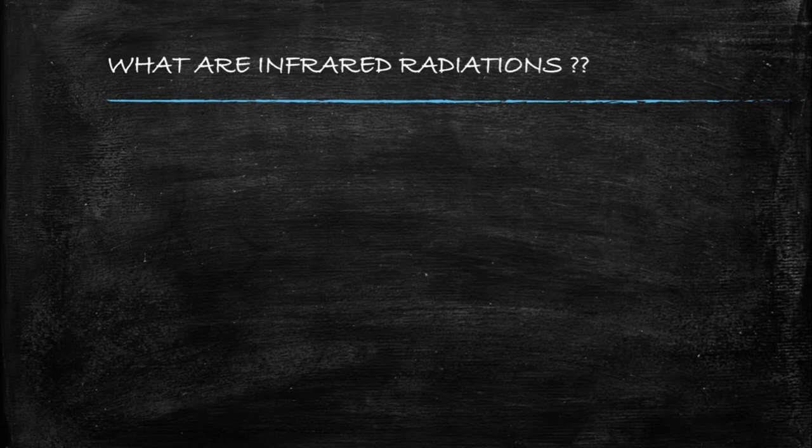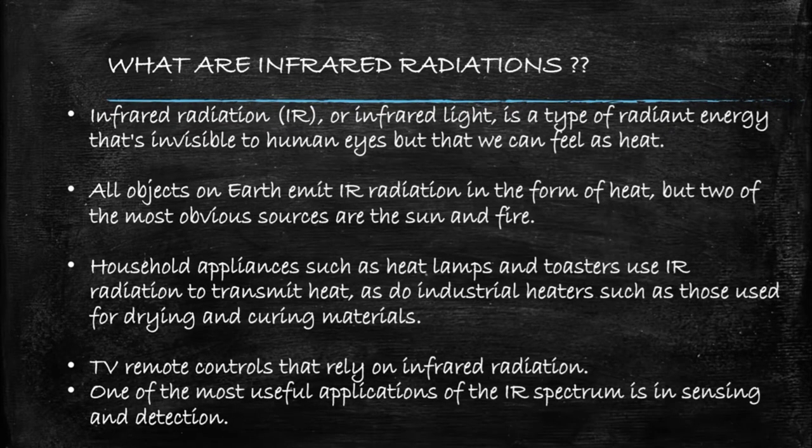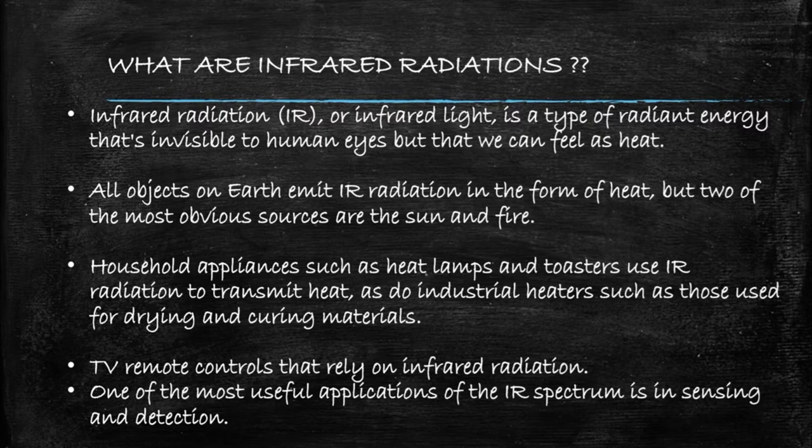Now let's see about IR radiations, which are called infrared radiations. IR radiation is the heat we feel. Every object on earth emits IR radiations in the form of heat, but the natural sources of IR radiations are the sun and fire. Our household appliances such as heat lamps, toasters, etc., use IR radiations to transmit heat. Similarly, industrial heaters use IR radiations for the process of drying and curing materials.